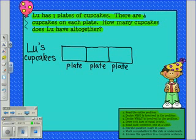Let's go on to the second sentence. There are four cupcakes on each plate. Let's write four in each of the three unit bars. Now our model shows Lou's three plates with four cupcakes on each plate.